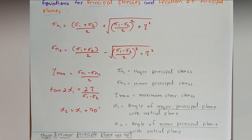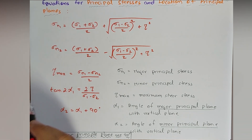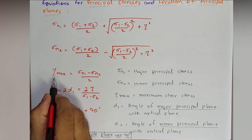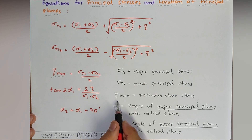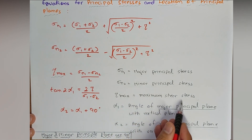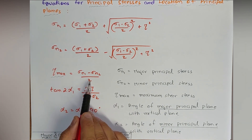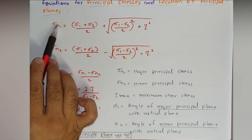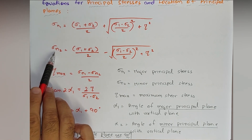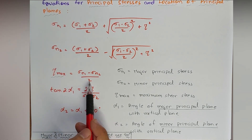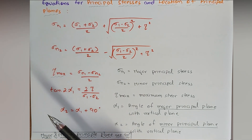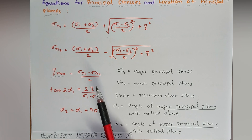If we want to calculate the maximum shear stress acting on the plane, the formula is τmax = (σn1 − σn2)/2, that is major principal stress minus minor principal stress, divided by 2 — the average of those two.